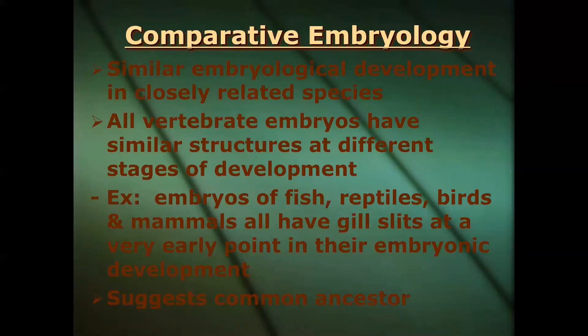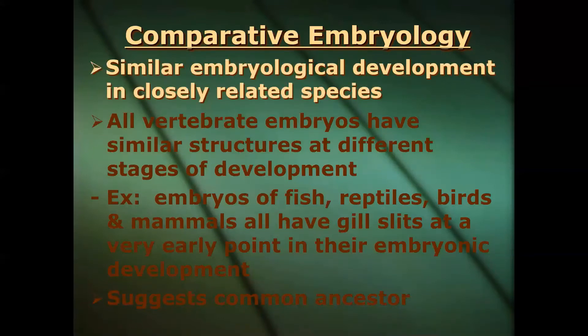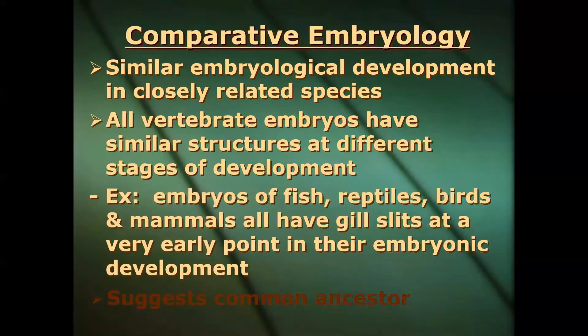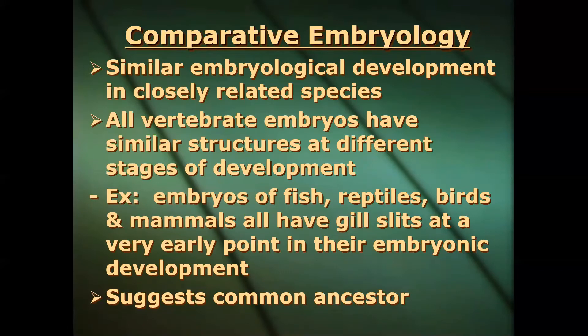Comparative embryology is also part of the anatomical record. This is where we look at the development of the embryo to a fetus and see how it's very similar across species. All vertebrate embryos have very similar structures at different points of their development. For example, when it comes to reptiles, birds, and mammals, we all have gill slits at a very early point in our embryonic development. Even humans very early in development actually have gills — those gill slits end up becoming part of our inner ear. This definitely suggests a possible common ancestor.